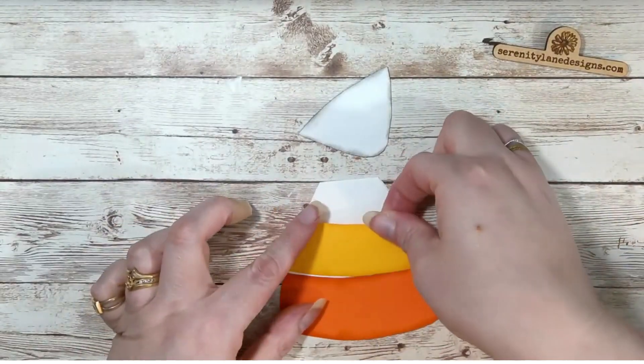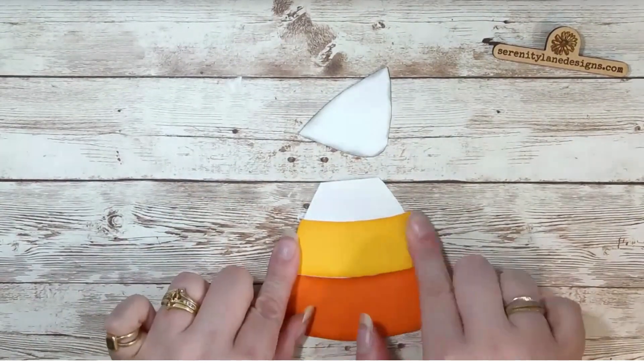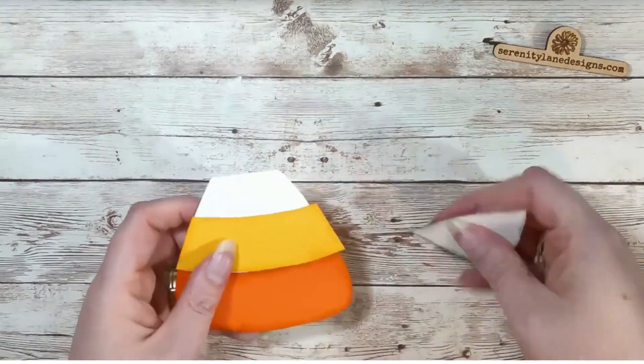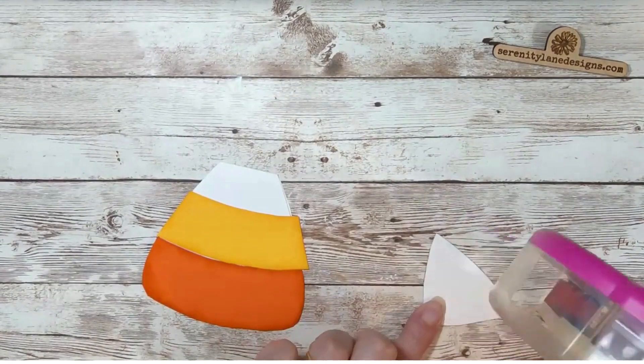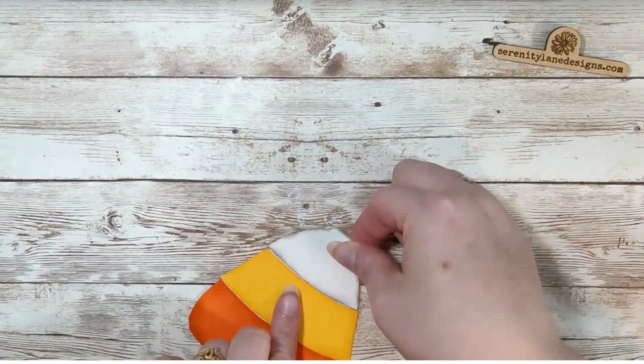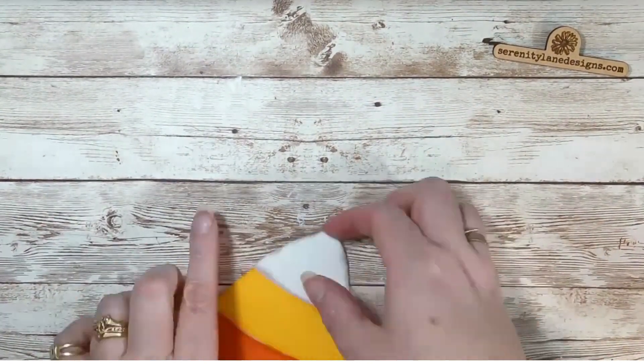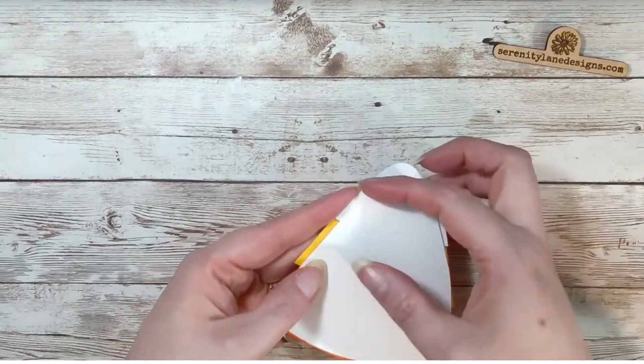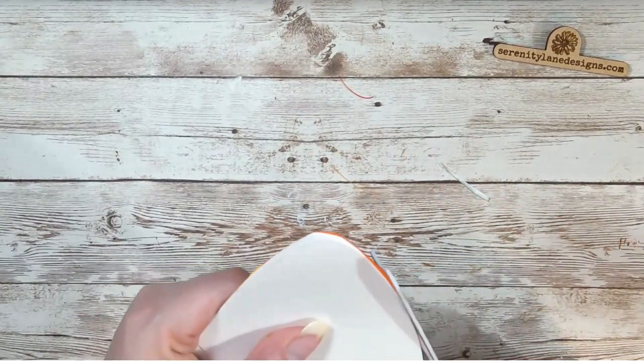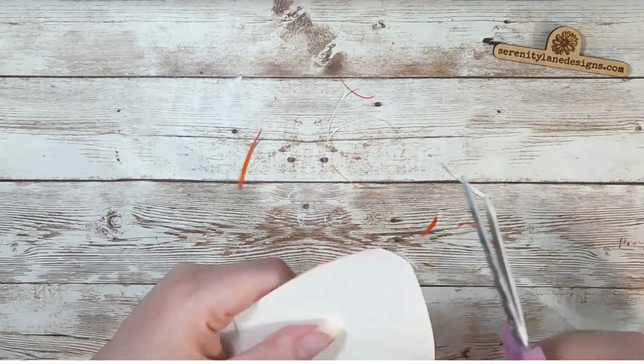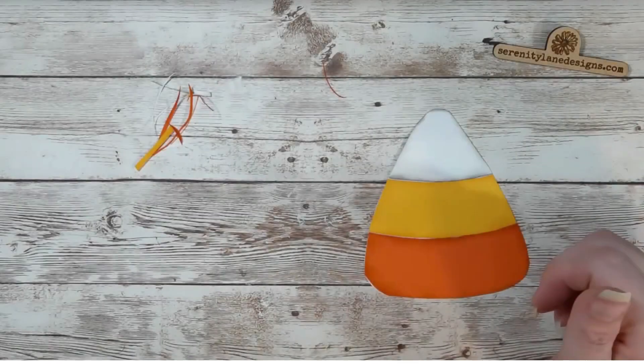You're just going to glue the pieces up. As you can see, the white sticks up over top of the fold. Then turn it over and if you have any extra, you can just trim that off. And there you have a simple candy corn card.